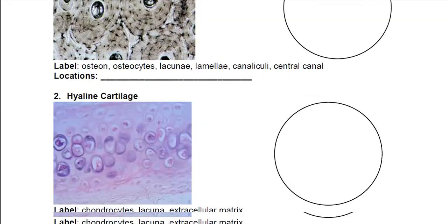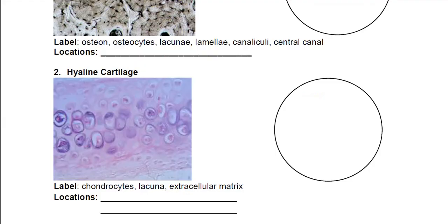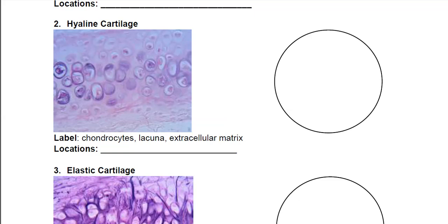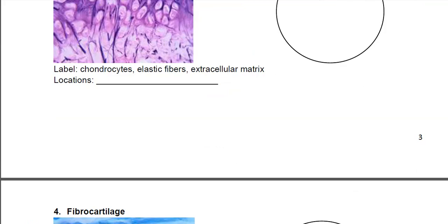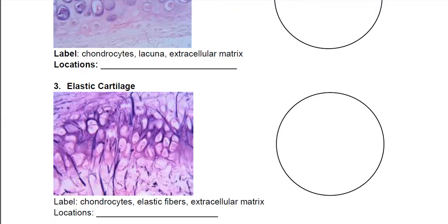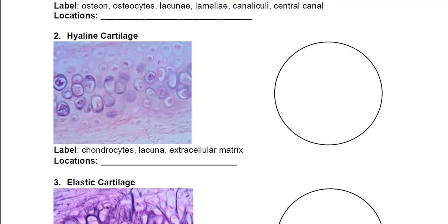Make sure you fill in where you can find compact bone. Then we have three types of cartilage: hyaline, elastic, and fibrocartilage. Looking at this slide, number one, we have chondrocytes — the cells that make cartilage. Like osteocytes, they live in the lacuna. These bubbles you see are actually the lacuna, and living in the lacuna are the chondrocytes. What's outside of the lacuna is the extracellular matrix.